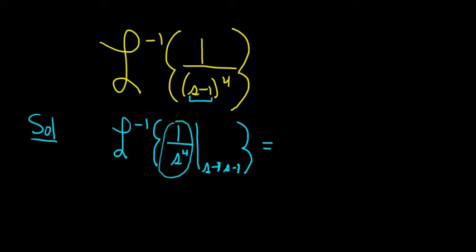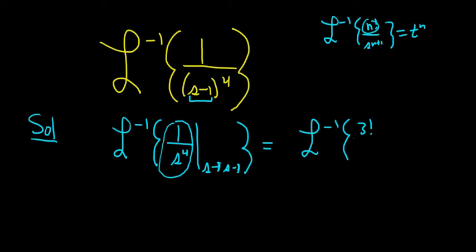So here we need a 3 factorial. Why? Because if you have the inverse Laplace of n factorial over s to the n plus 1, that's equal to t to the n. So you have to have 1 less up top. So what we'll do is we'll put the 3 factorial there. But if you put it there, you've got to take it away. So I'll put it down here.